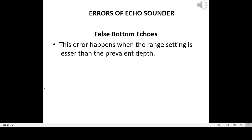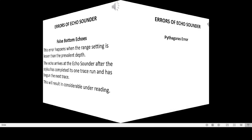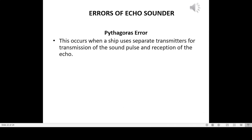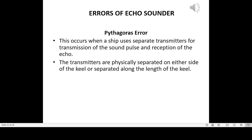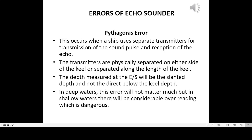False bottom echoes: this error occurs when the range setting is less than the prevalent depth. The echo arrives after the stylus has completed its trace and begun the next trace, resulting in considerable under-reading. Lateral beam error: this occurs when a ship uses separate transmitters and receivers physically separated on either side of or along the keel. The depth measured will be the slanted depth, not the direct below-keel depth. In deep waters this matters little, but in shallow waters there will be considerable over-reading, which is dangerous.